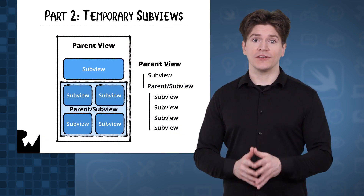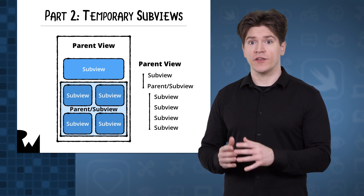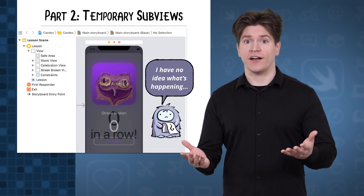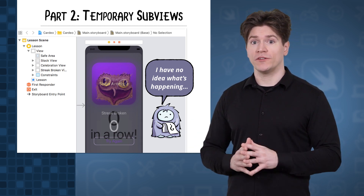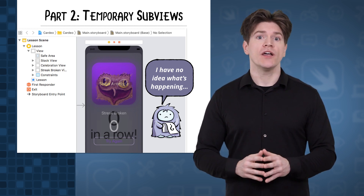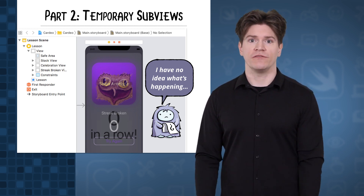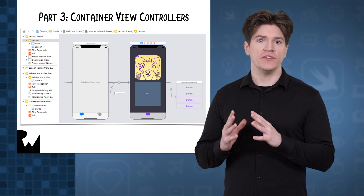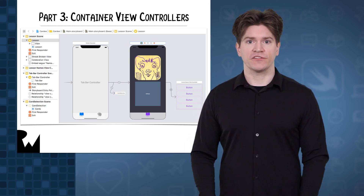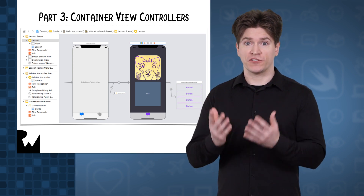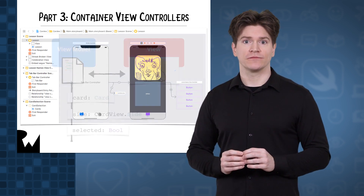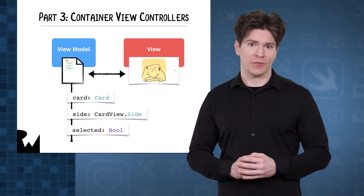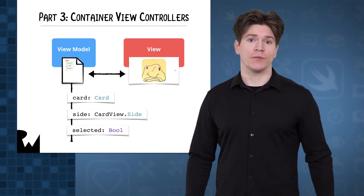Part two of this course will cover a lot of ground. We'll return to the storyboards you're familiar with and take a look at the relationship between parent views and their subviews. We'll also introduce you to the scene dock. Have you ever wanted to create a view that you only wanted to appear sometimes? By the end of part two, you'll see how the scene dock can really help you out with those temporary views. To finish out the course, part three will focus on container view controllers. Those allow you to nest view controllers by embedding them in container views. You'll learn to connect multiple storyboards together with storyboard references combined with container view controllers. And after all this practice with views and controllers, we'll revisit the model portion of the model-view-controller pattern.